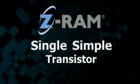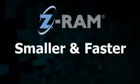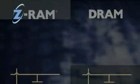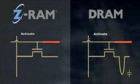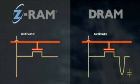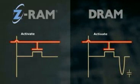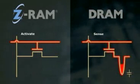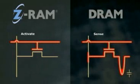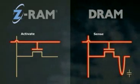Here's an example of how Z-RAM can be both smaller and faster. Let's compare it side-by-side with DRAM. To begin a read operation, the gate of the transistor is brought high, turning the transistor on and allowing current to flow. With DRAM, the charge on the capacitor flows through the transistor onto a bit line, slowly equalizing the voltages. As the bit line voltage climbs, it will eventually reach a point where the state of the memory cell can be detected.